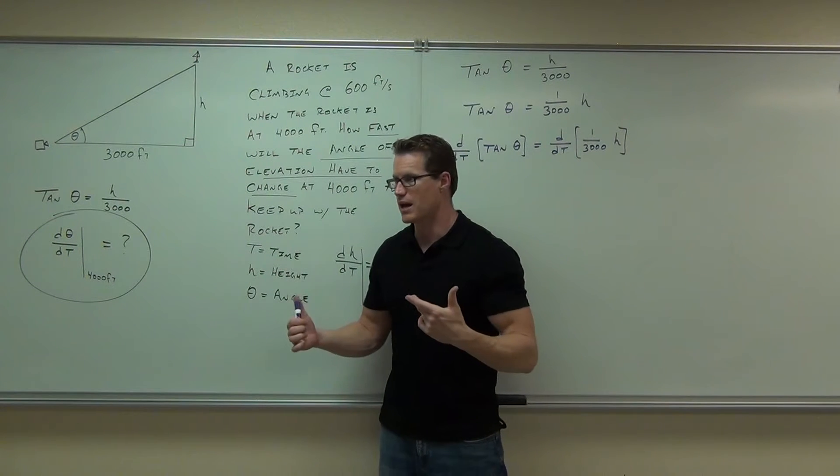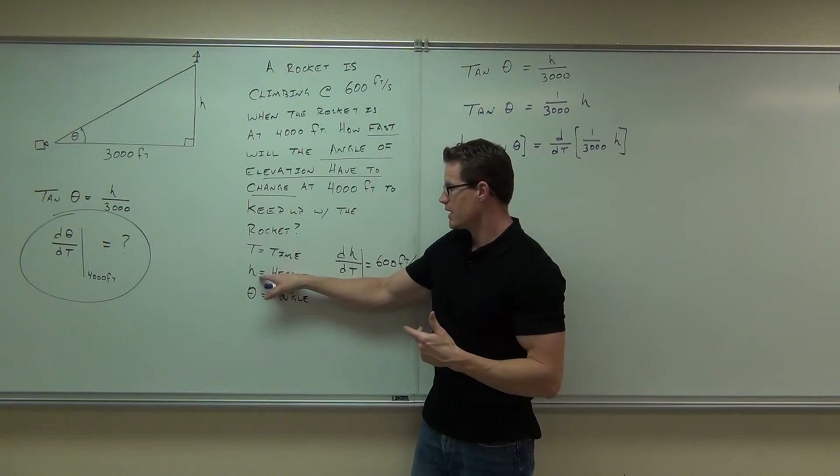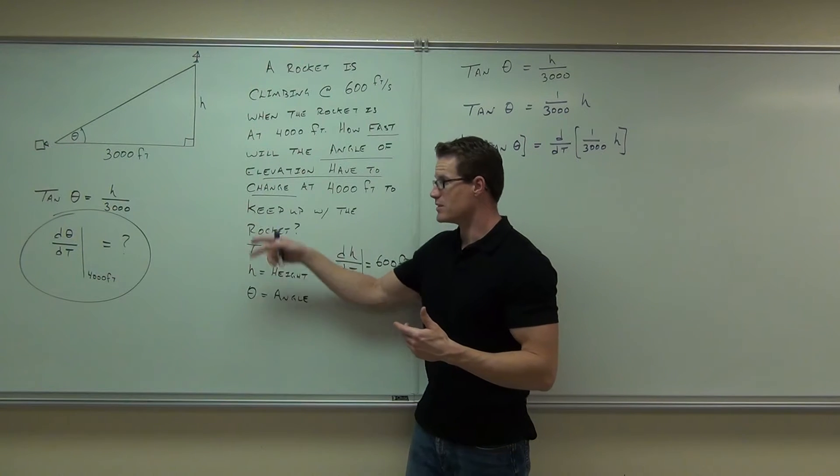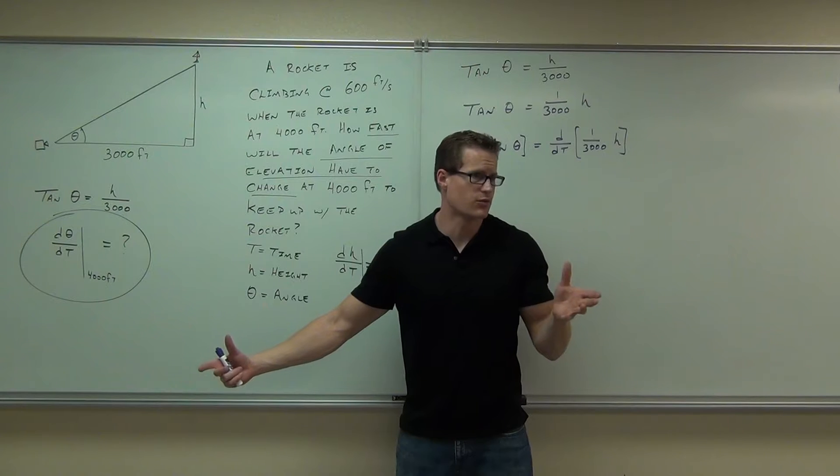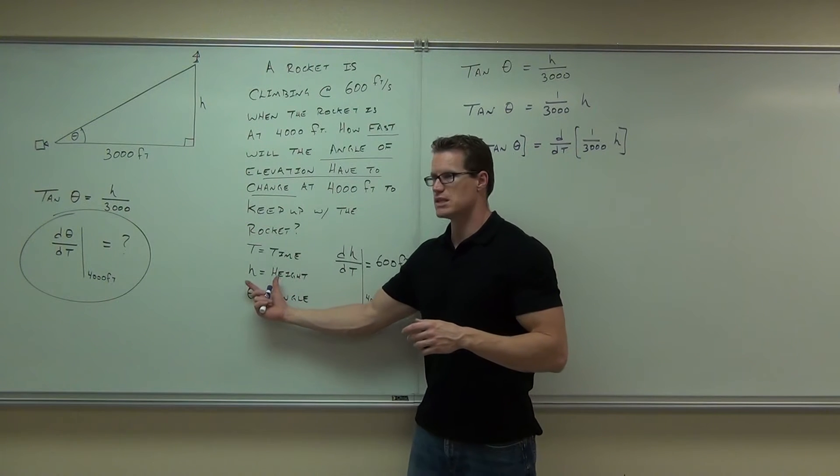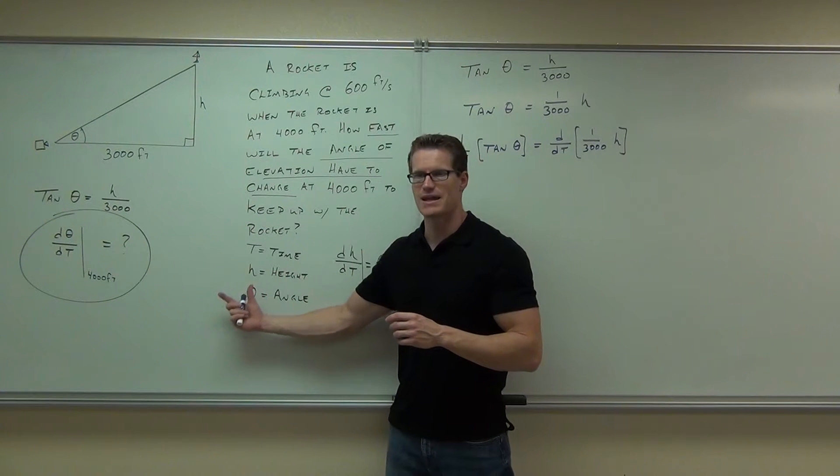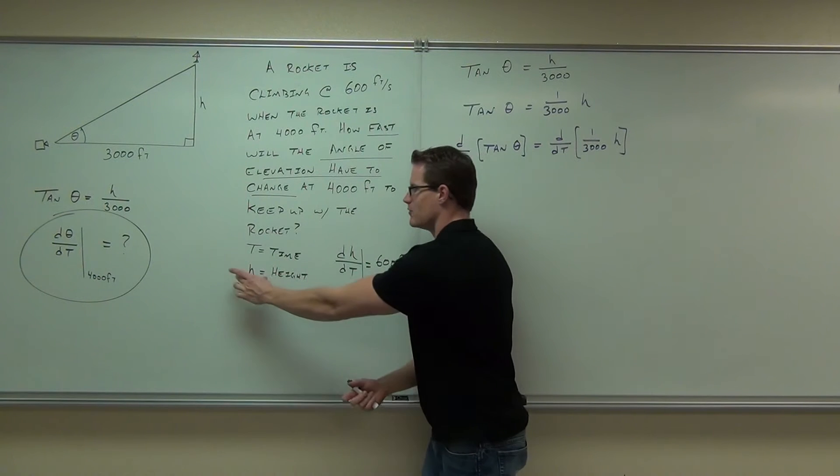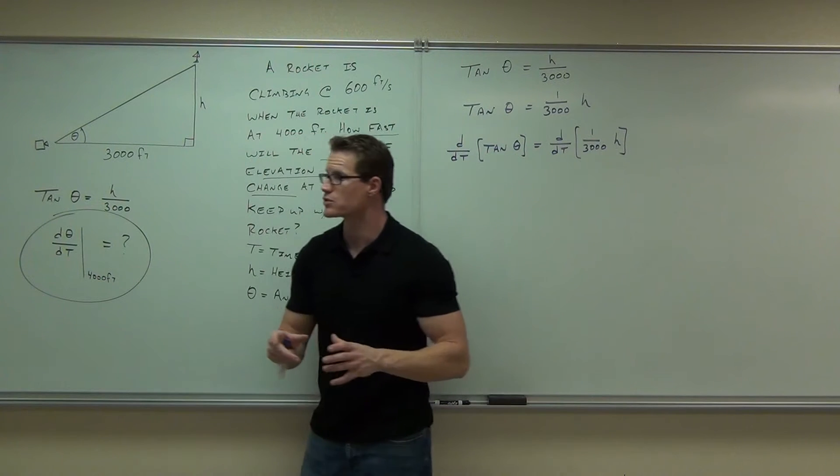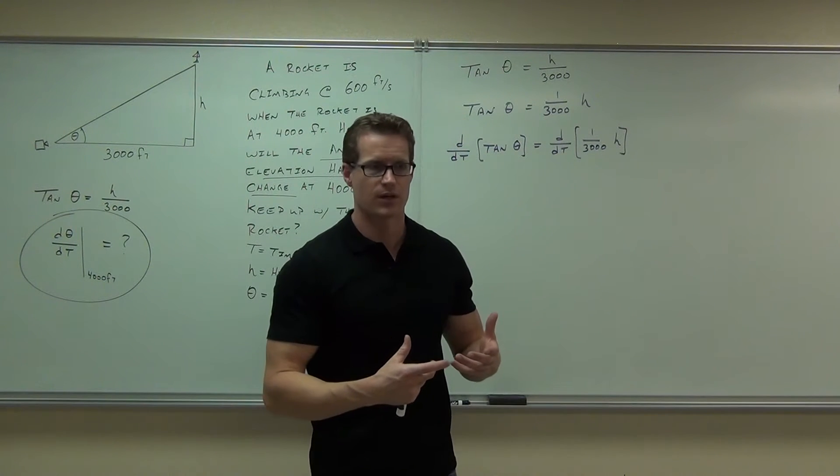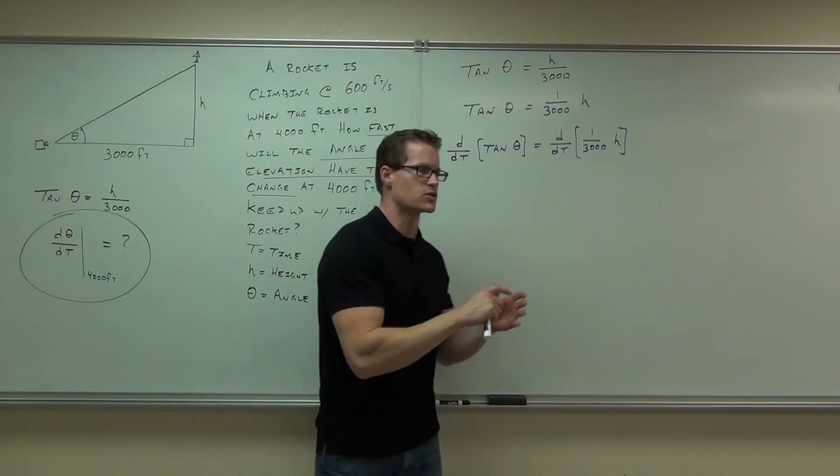You'll have a d variable over dt for every variable that you have. So when we have h and we have theta, you're going to have a d theta dt. In fact, that's what we're counting on, because that's what we're solving for. But you're also going to have a dh dt, so you need to be able to identify that. You're going to have one of those for every variable that you have, because it's all implicit. They're all functions of t.